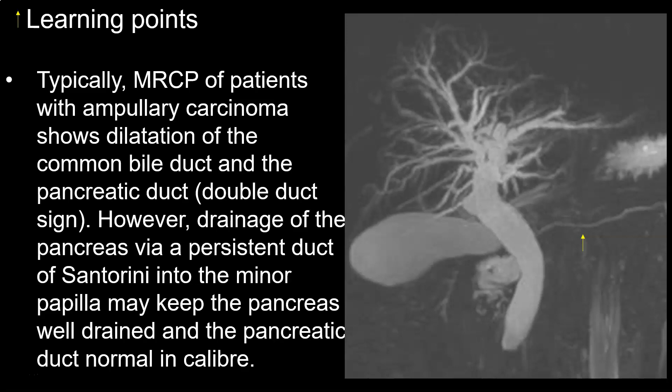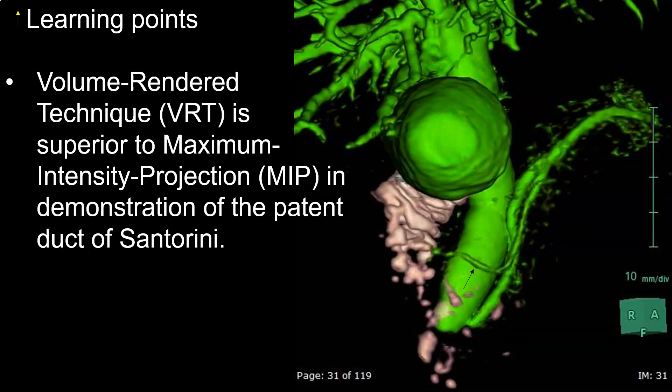Typically, MRCP of patients with ampullary carcinoma shows dilatation of the common bile duct and the pancreatic duct — the so-called double duct sign. However, drainage of the pancreas via a persistent duct of Santorini into the minor papilla may keep the pancreas well drained and the pancreatic duct normal in caliber. Volume rendered technique is superior to maximum intensity projection in demonstration of the patent duct of Santorini.